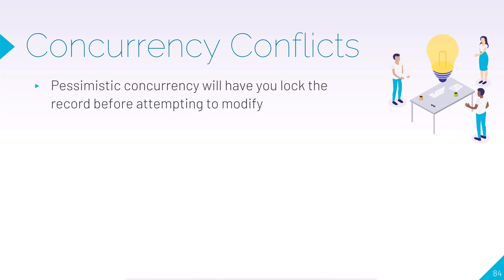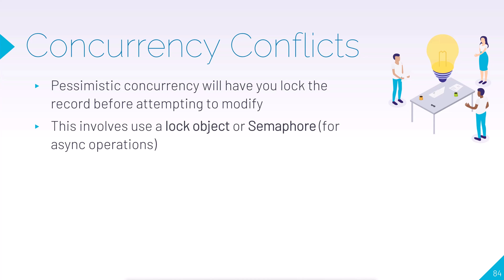You also have a concept called pessimistic concurrency, which is kind of out of the scope of this course, but worth mentioning. Pessimistic concurrency means that you write your application code in such a way that you actually lock the record while an operation is being performed. That way you can ensure that when somebody else is trying to access that record while it's locked, that will just fail — so only one person at a time will ever access this record. Generally, this is done using a lock object or a SemaphoreSlim object if you're doing asynchronous operations.